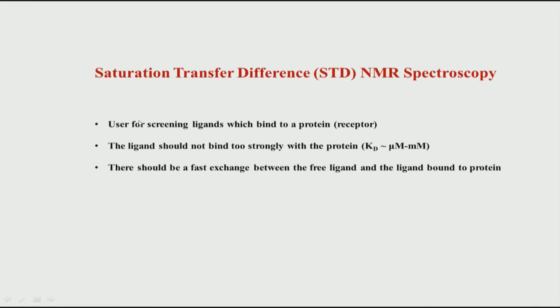Where is this spectroscopy method used? This is typically used for screening ligands. We have a target protein or receptor which we have isolated, and we are trying to find out which molecule will bind to this protein, so we are screening a large number of molecules from a library.